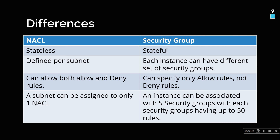Both NACL and security groups are used as checkpoints in your VPC. When any external request enters your VPC, it first gets validated by the NACL at the subnet level — the default NACL allows everything, but a custom NACL validates based on its rules. After passing the subnet-level check, the request then reaches the second checkpoint at the EC2 instance level, which is the security group, where more rules determine whether the request is allowed or denied.